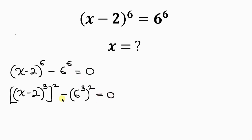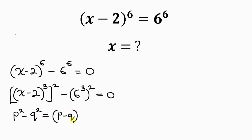We now have an expression in the difference of two squares. For example, p squared minus q squared can be written as p minus q times p plus q.